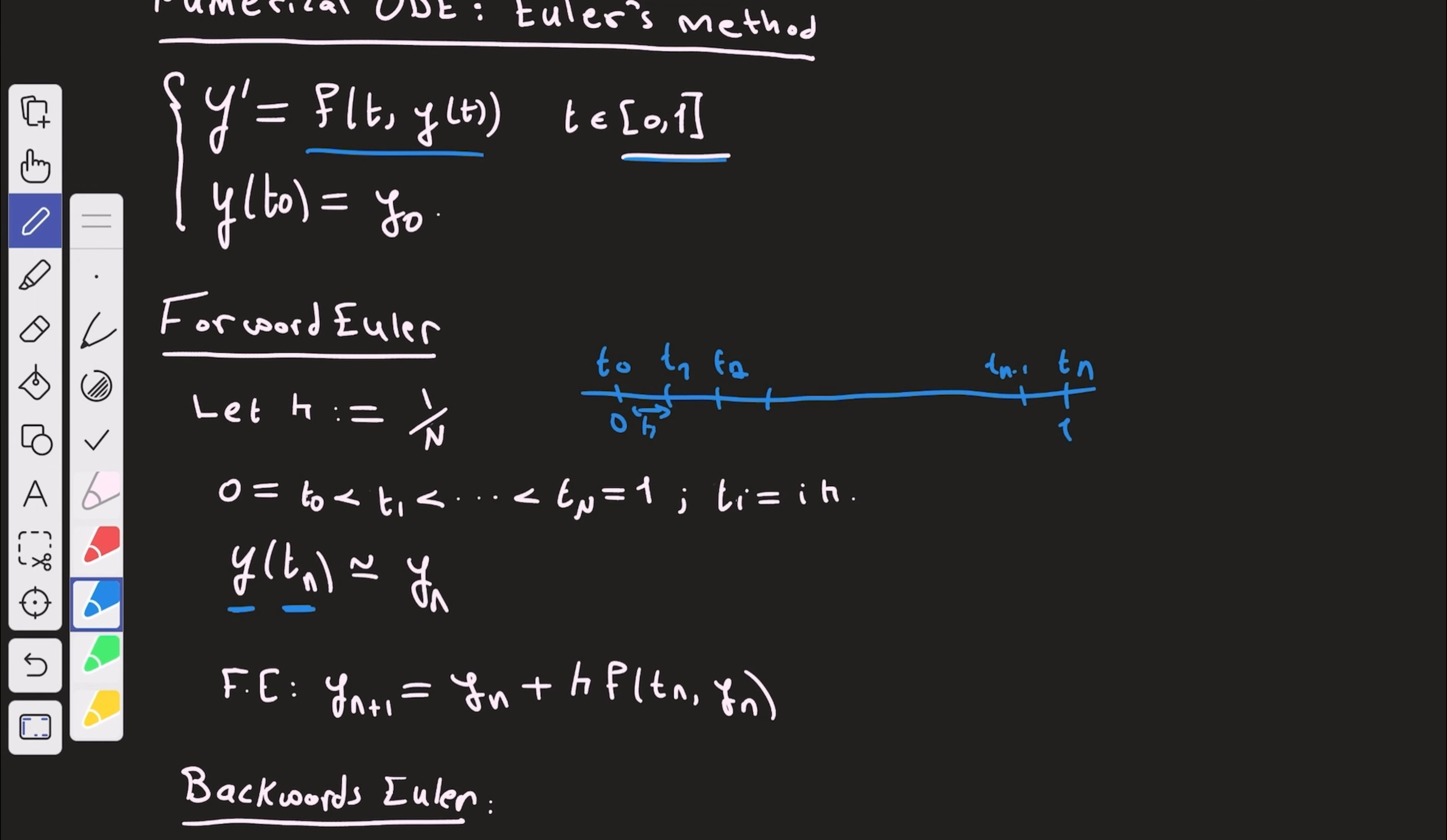Because remember, the end goal of solving this initial value problem is to actually find y. So we're interested in the value of y at the specific points, tn. So let's see how we can derive a method to approximate the value of y at tn by the numerical solution, yn.